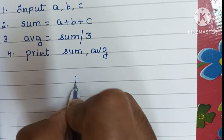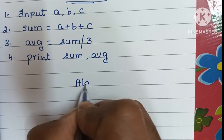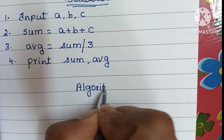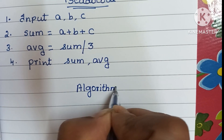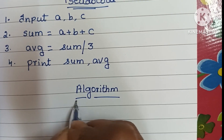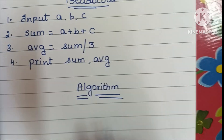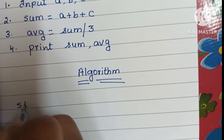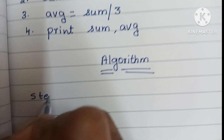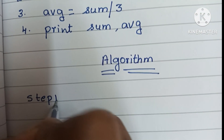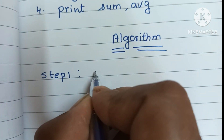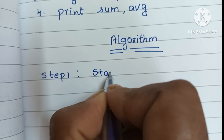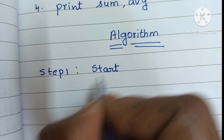Next we're going to write the algorithm. An algorithm is a step-by-step process to solve a problem. In step one, an algorithm always starts with a start statement.